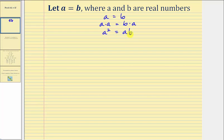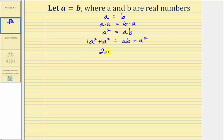Remember, the order of multiplication does not affect the product. Now for our next step, we're going to add A squared to both sides of the equation, so we'd have A squared plus A squared equals AB plus A squared. Notice here on the left, we have two like terms: one A squared plus one A squared would be two A squared. On the right, we have AB plus A squared, and using the commutative property of addition, we can write this as A squared plus AB.